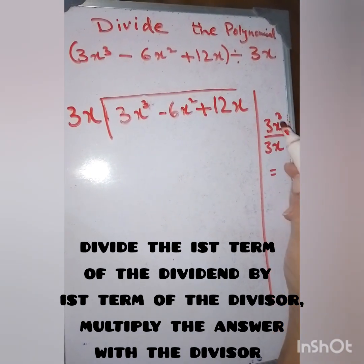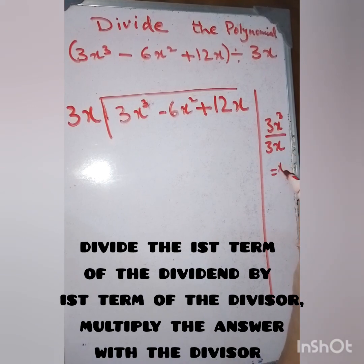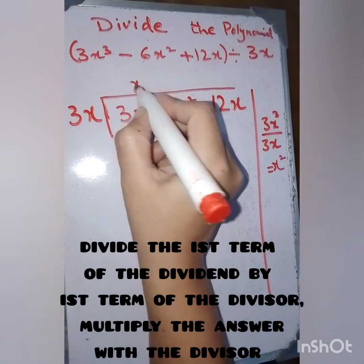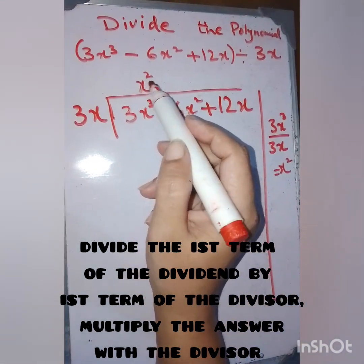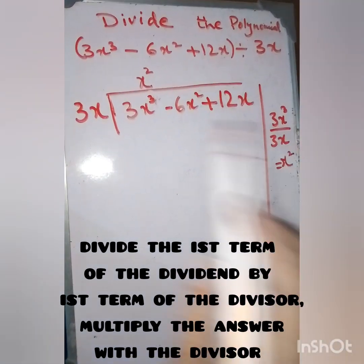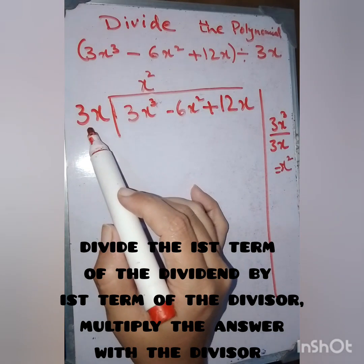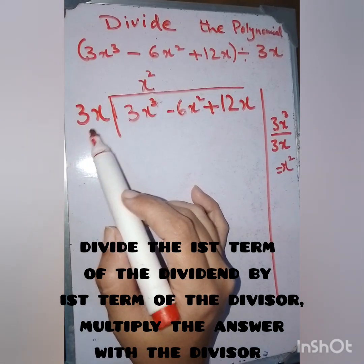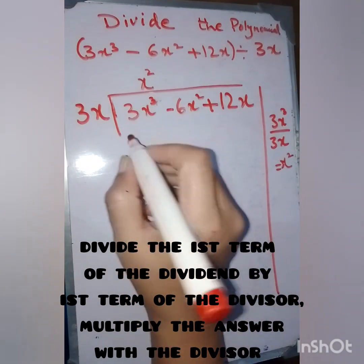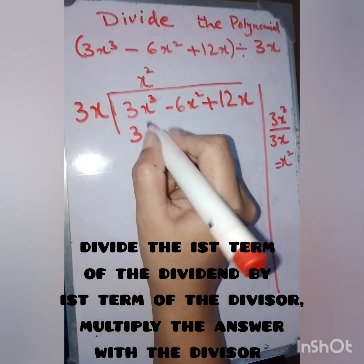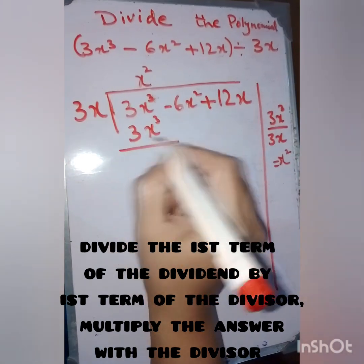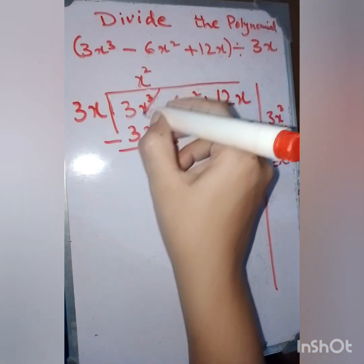It will be x³ divided by x. The answer will be x², and 3 and 3 will be cancelled out. So x² will be written here. Then we multiply this x² we obtained: x² times 3x equals 3x³. On subtraction, it is cancelled.